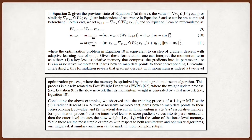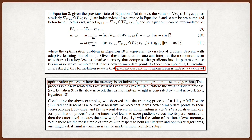For instance, they formally demonstrate that well-known gradient-based optimizers, like SGD with momentum, are themselves two-level optimization processes where the momentum term acts as an associative memory compressing past gradients.